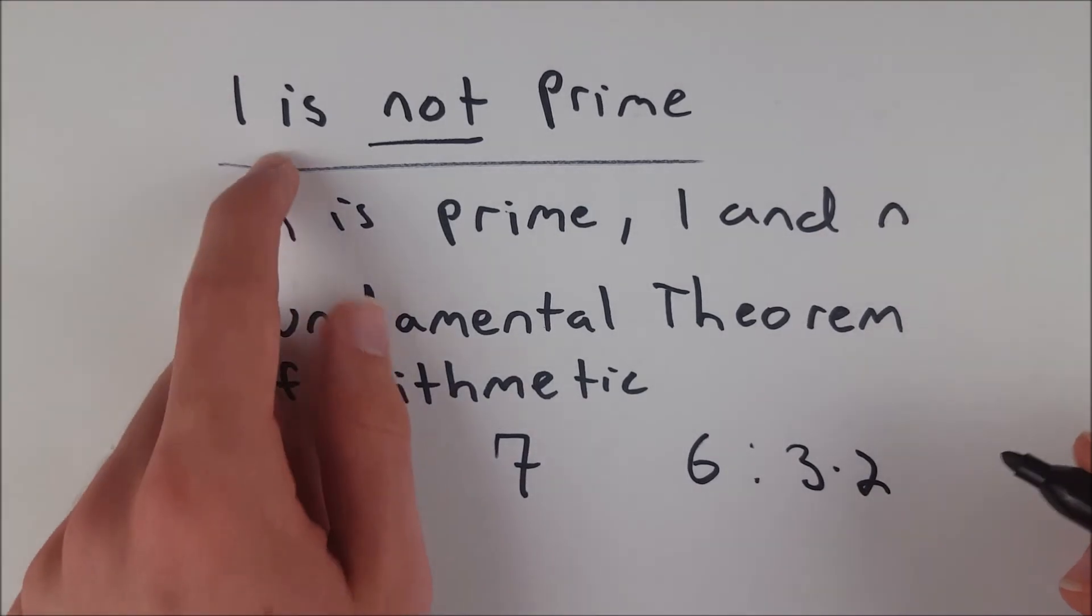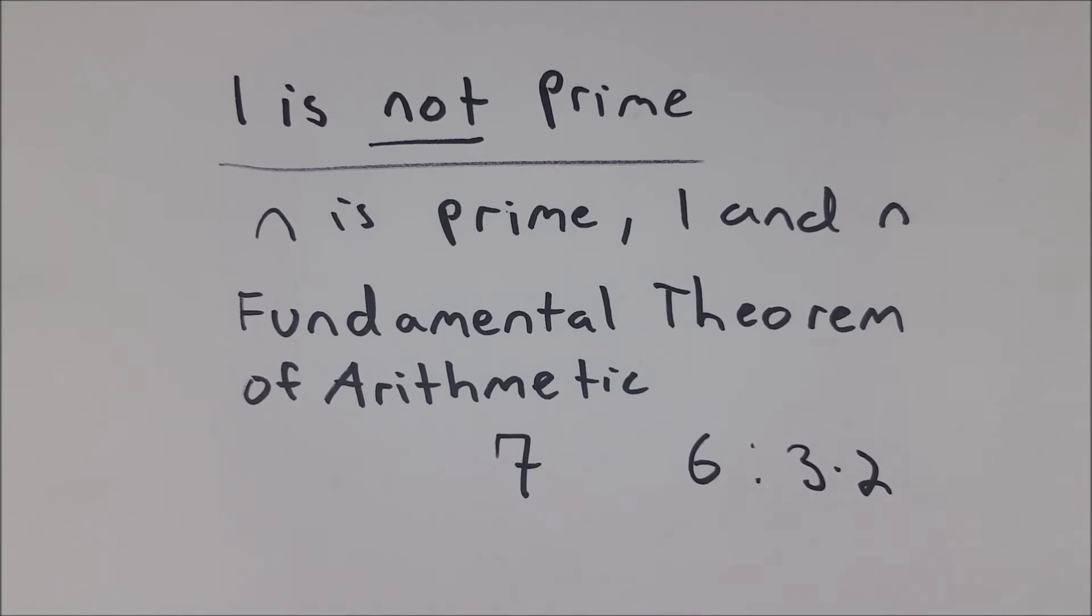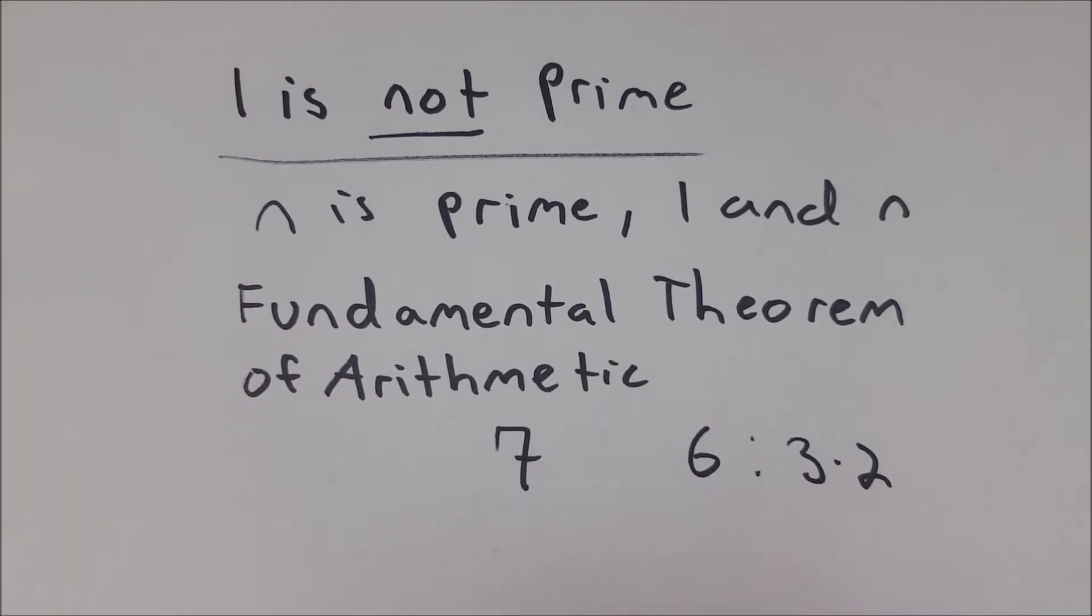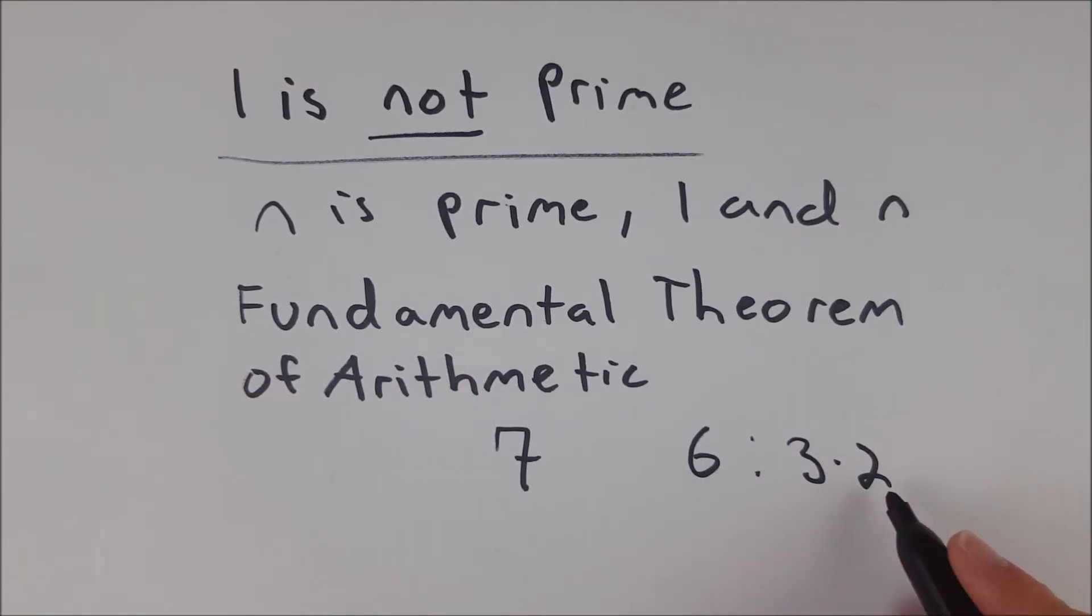But what if 1 was prime? Well, if 1 was prime, this theorem, either you need to add a complication that you can't use 1, or the theorem completely breaks down. As it is now, if you just added 1 into the list of primes, the theorem would no longer be true, because you could take this factorization, right? This is one factorization of 6, but we could also write it as this. This would be another prime factorization of 6, and this would be another prime factorization of 6, and so on. You can see how that could go.